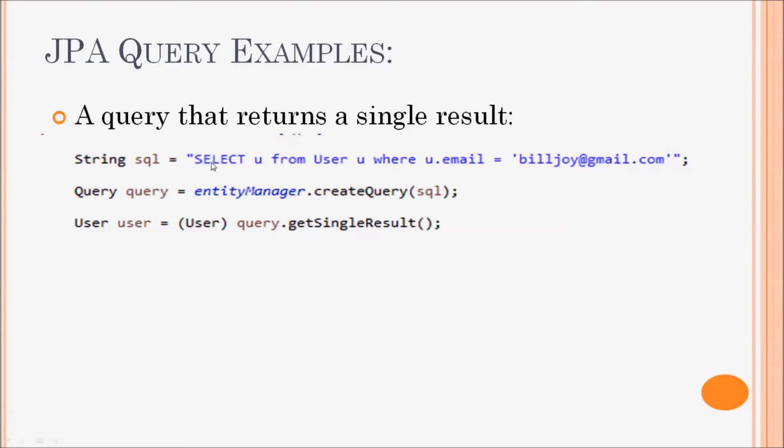This JPQL uses object-oriented syntax which is more convenient for programmers. You can see u.email here is object-oriented syntax. It accesses the email field of the user object named u.